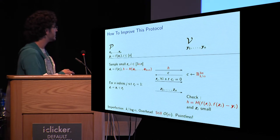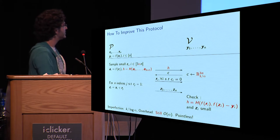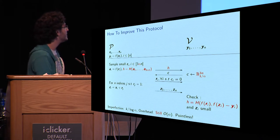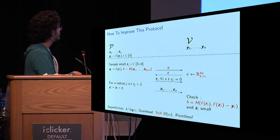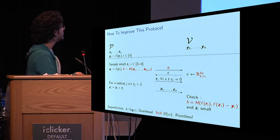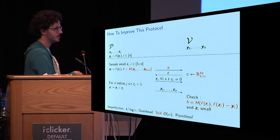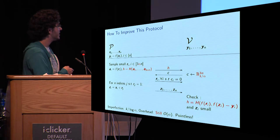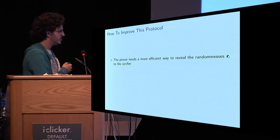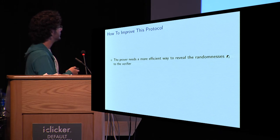So, now, are we done yet? Well, no. The overhead is still linear in alpha. Because, in the third step, we reveal most of the randomnesses. We will, on average, reveal three times alpha minus one times n randomnesses, which is clearly linear in alpha and much too large. So, we need a more efficient way to reveal the randomnesses to the verifier.